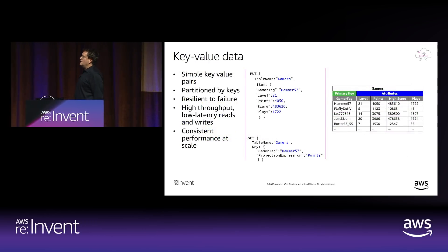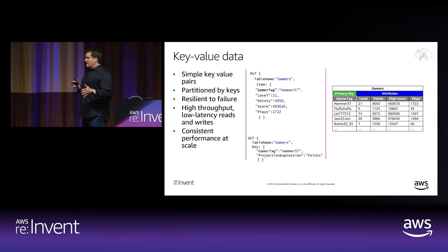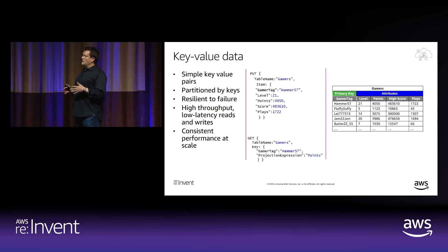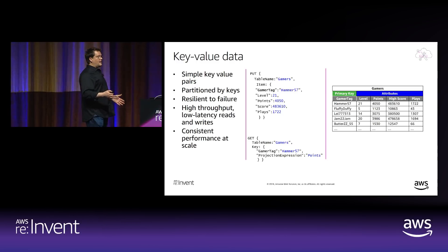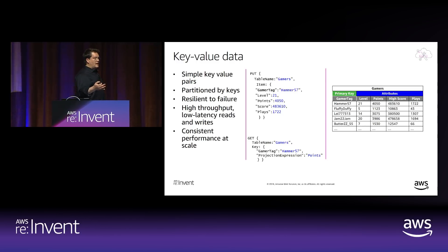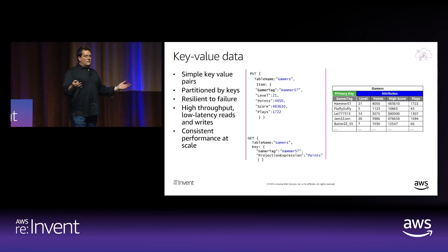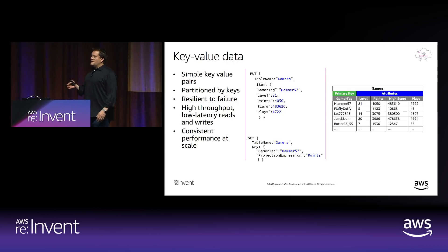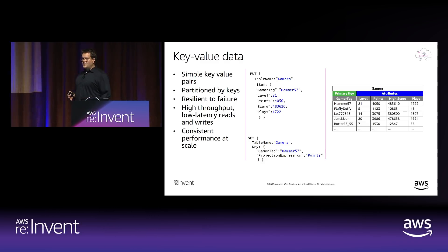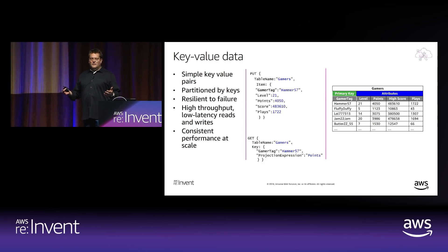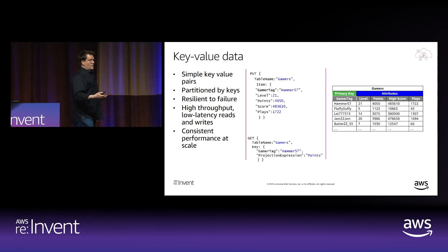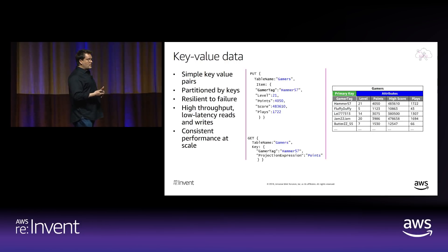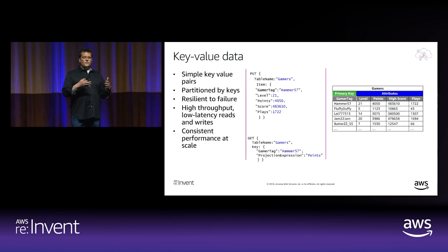Key-value is all about simple key-value pairs, horizontal partitioning, and consistent performance at scale. If you and I were building a video game app, we don't know if we'll have 100,000 users or 100 million — but no matter what, we need consistent performance at scale. Can you imagine if we built a video game and it stopped scaling? Players today are one click away from the next game. That's why key-value shines in use cases where you need very consistent performance at scale with a very flexible model.